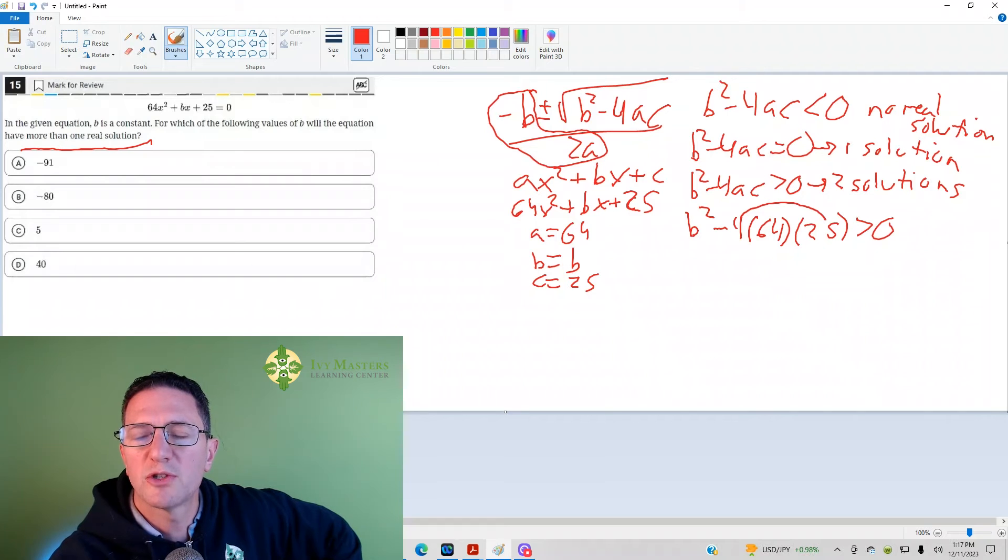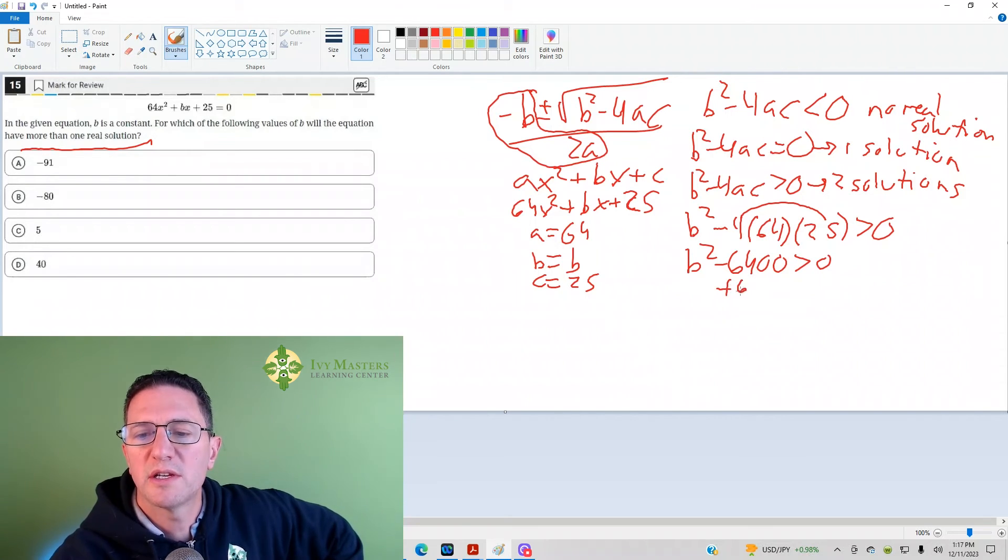If you notice, 4 times 25 is 100 times 64 is 6400. So b squared minus 6400 is greater than 0. Then you add your 6400 to both sides and cancel. Here you get b squared is greater than 6400.